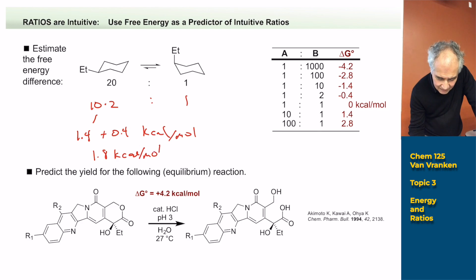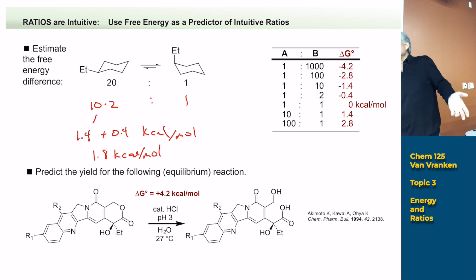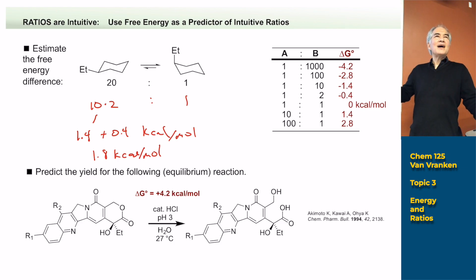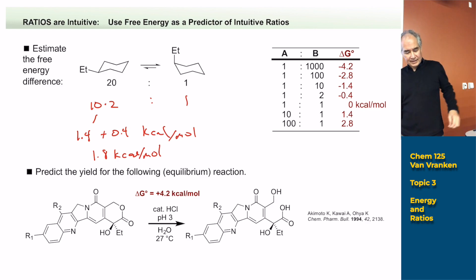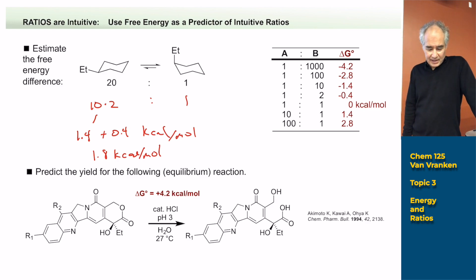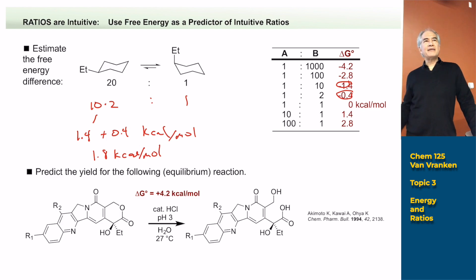That's about the most advanced math I get here. A 20-to-one ratio is kind of a 95-to-5 ratio when measured in percent — 94 to 6 or 96 to 4 is roughly 20-to-one. You should be able to work that equation. I just used those two numbers — 1.4 and 0.4 — and added the free energies, while multiplying the factors.